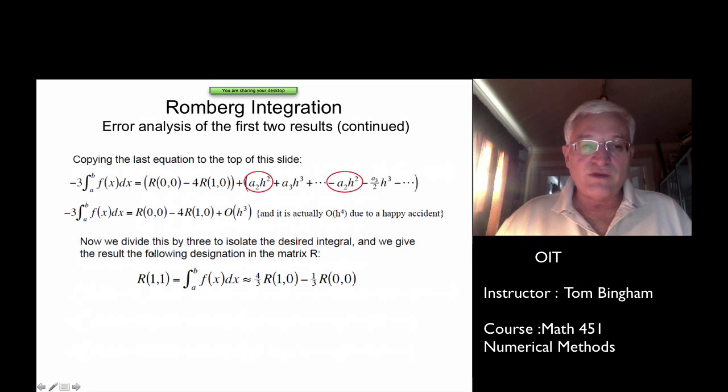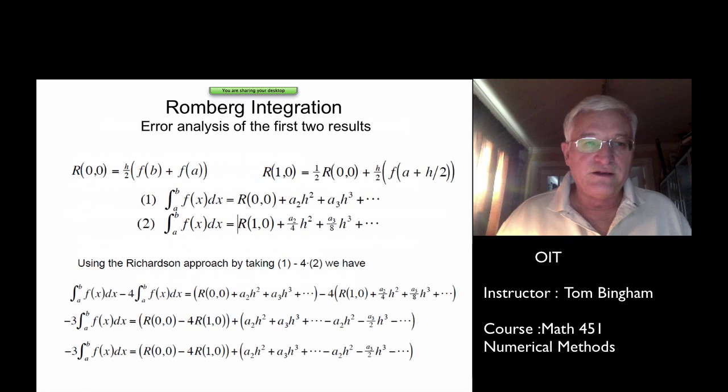So that means we now have minus 3 times the integral we want is a linear combination of R(0,0) and R(1,0). Divide both sides by minus 3, and you'll end up getting a predictor of 4 thirds R(1,0) minus 1 third R(0,0). Now if you can do that on the first two entries, we only produced R(0,0) and R(1,0), and what we just calculated is going to be called R(1,1).